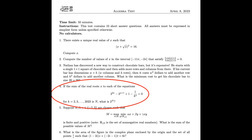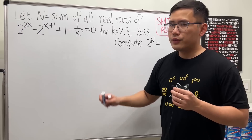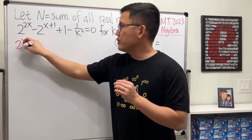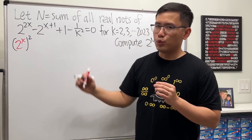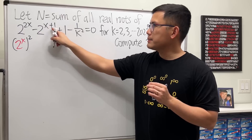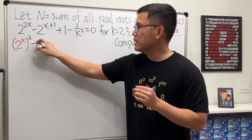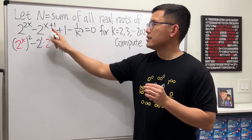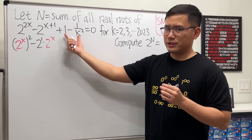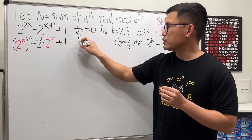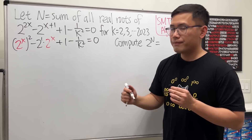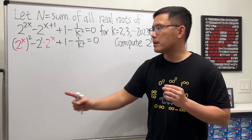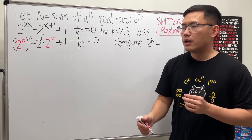Now let's see how we can solve this. First, 2^(2x) can be written as (2^x) squared by the rule of exponents. Likewise, 2^(x+1) can be written as 2 to the first times 2^x. Now I'll keep the rest as is: plus 1 minus 1 over k squared equals zero. Have a look — this is actually a quadratic equation in terms of 2^x.